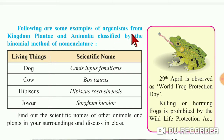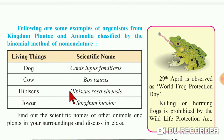Following are some examples of organisms from Kingdom Plantae and Animalia classified by the binomial method of nomenclature. The first living thing is dog and its scientific name is Canis lupus familiaris. The second living thing is cow.